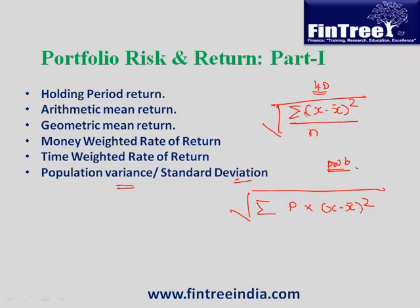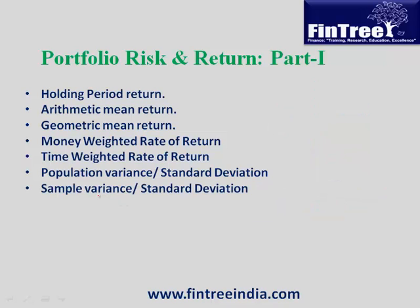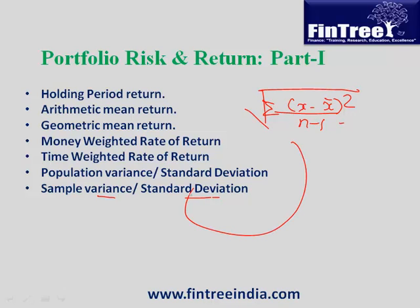The 1/n factor is replaced by the probability, which varies from observation to observation. For sample variance and standard deviation, the formula works the same way — the only difference is the denominator changes to n minus 1. So sample variance = summation of (x minus x-bar) squared divided by (n − 1), and sample standard deviation is the square root of that.